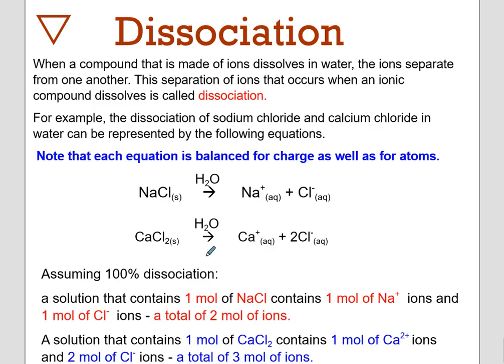Assuming 100% dissociation, a solution containing one mole of NaCl contains one mole of sodium ions and one mole of chloride ions, a total of two moles of ions. With CaCl2, we get one mole calcium and two moles chloride, for a total of three moles of ions from one mole of salt.